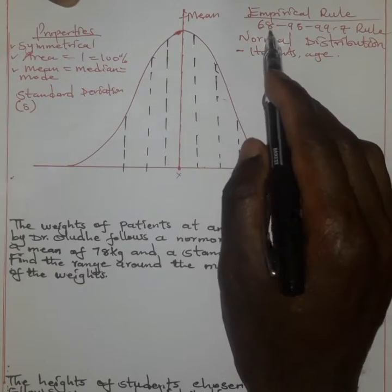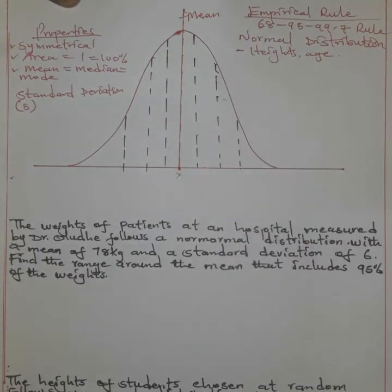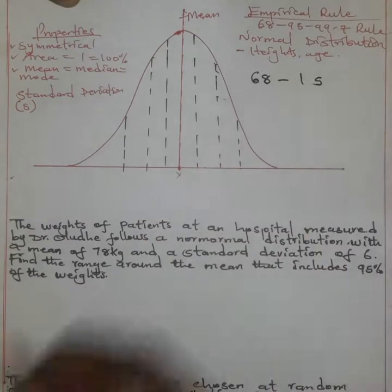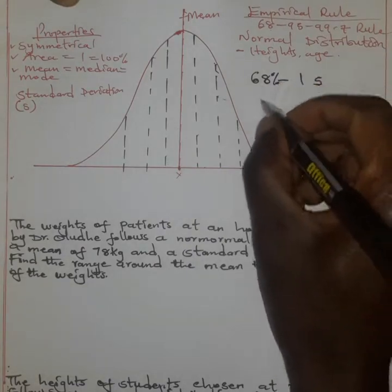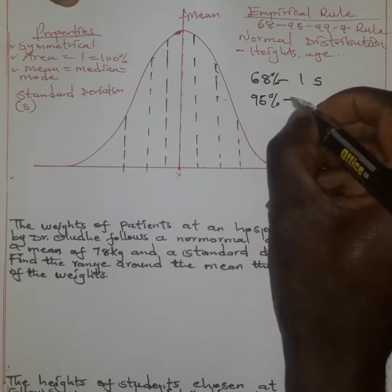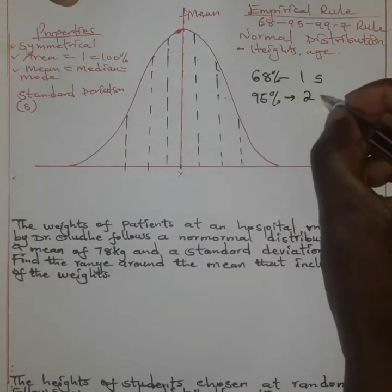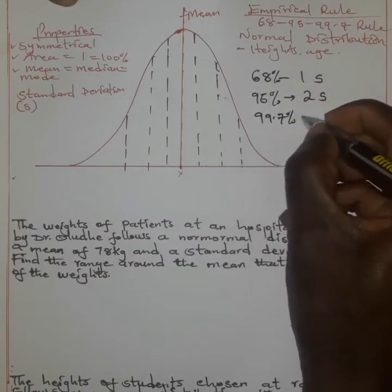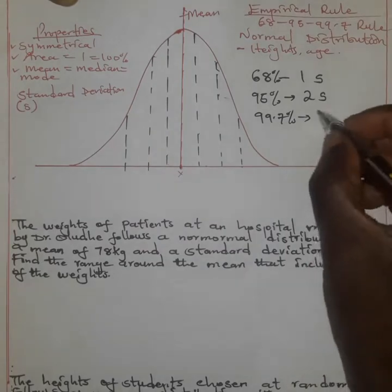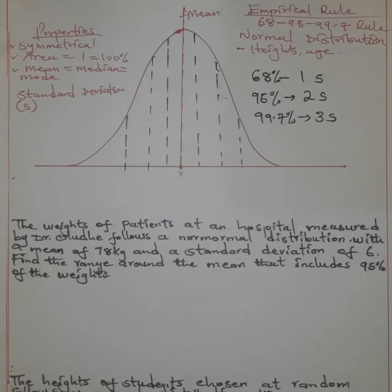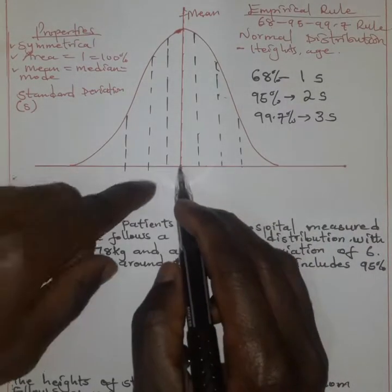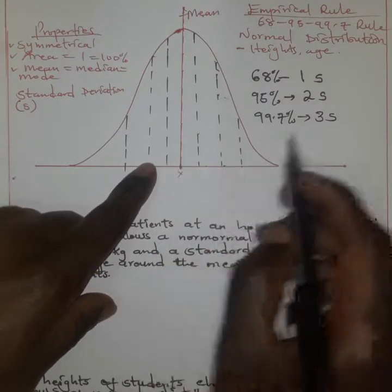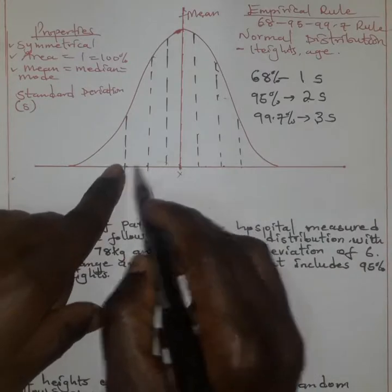So 68% is actually a percentage of area which is normally covered by one standard deviation. 95% is an area which is covered by two standard deviations. And finally, 99.7% represents an area which is covered by three standard deviations. One standard deviation means one spread to the left and one to the right; two means two to the left and two to the right; and three means three to the left and three to the right.